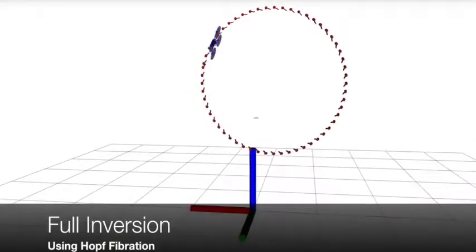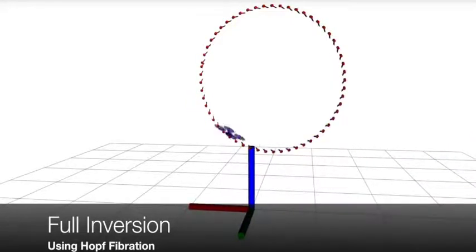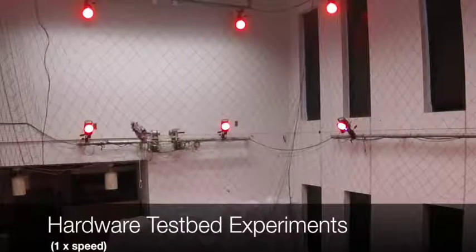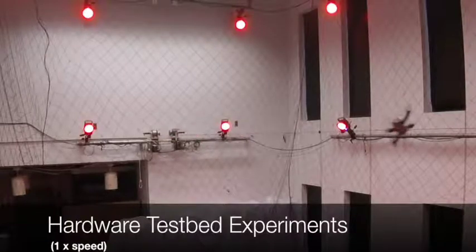Using a Hopf fibration, we can avoid the singularity caused by parameterizing SO3 and perform full inversions. We demonstrate this controller on a commercially available racing quadrotor in a motion capture space.